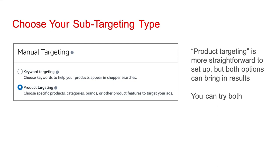You have two options here: keyword targeting and product targeting. With keyword targeting, you pick keywords that people may be searching for on Amazon and Amazon will target your ad to searchers of those keywords. With product targeting, you can pick individual products or groups of products — for example, books of an entire genre — and Amazon will target your ads to people interested in those products. Product targeting is more straightforward to set up.